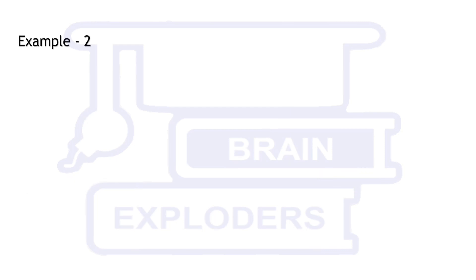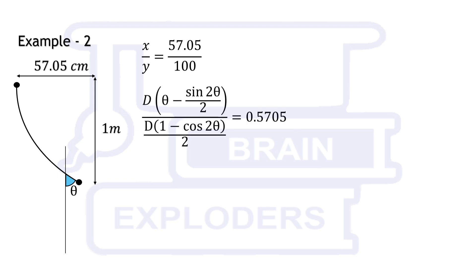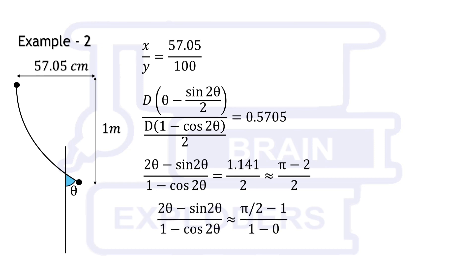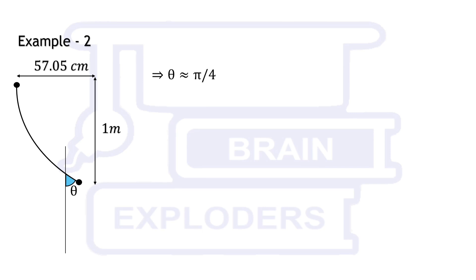In second example horizontal and vertical distances between the points are 57.05 cm and 1 m respectively. Ratio of x and y becomes 57.05 cm over 100. Put the parametric coordinates in place of x and y. This ratio is approximately equal to pi minus 2 over 2 or pi by 2 minus 1 over 1 minus 0. Clearly 2 theta is approximately equal to pi by 2 and theta is approximately equal to pi by 4.